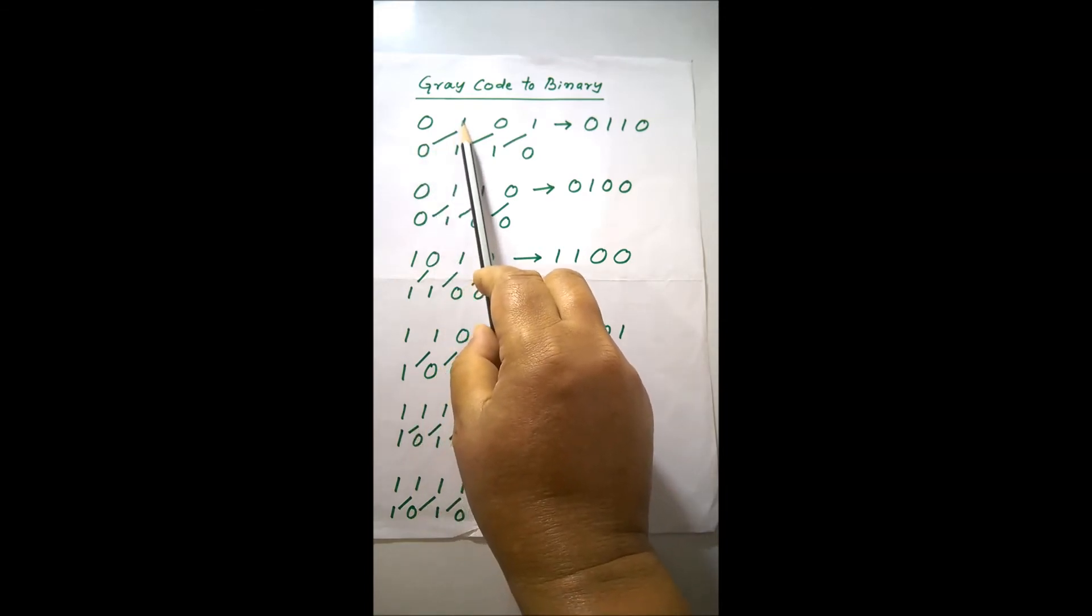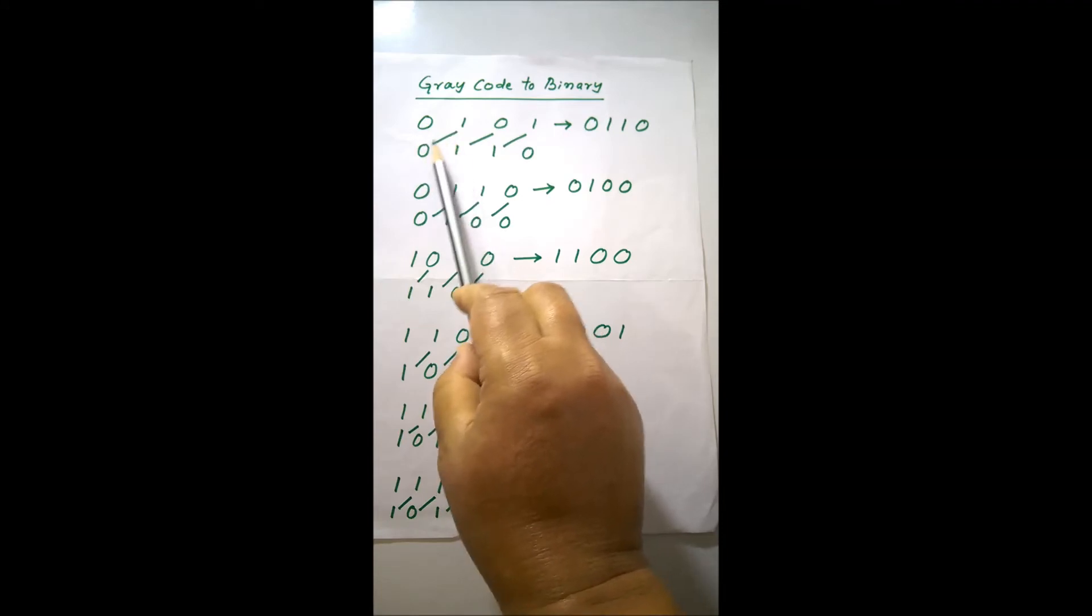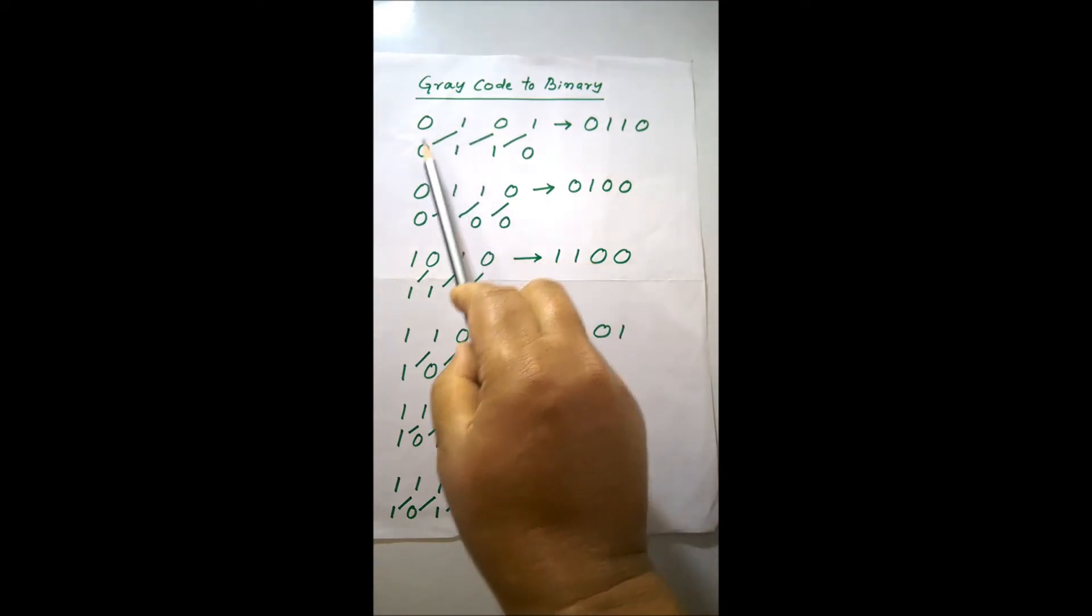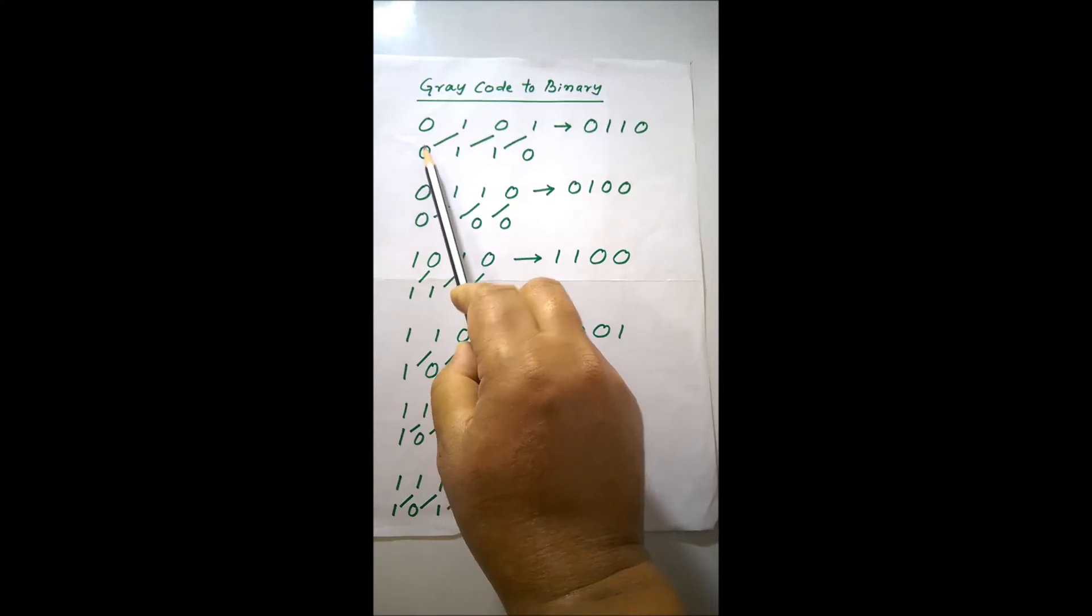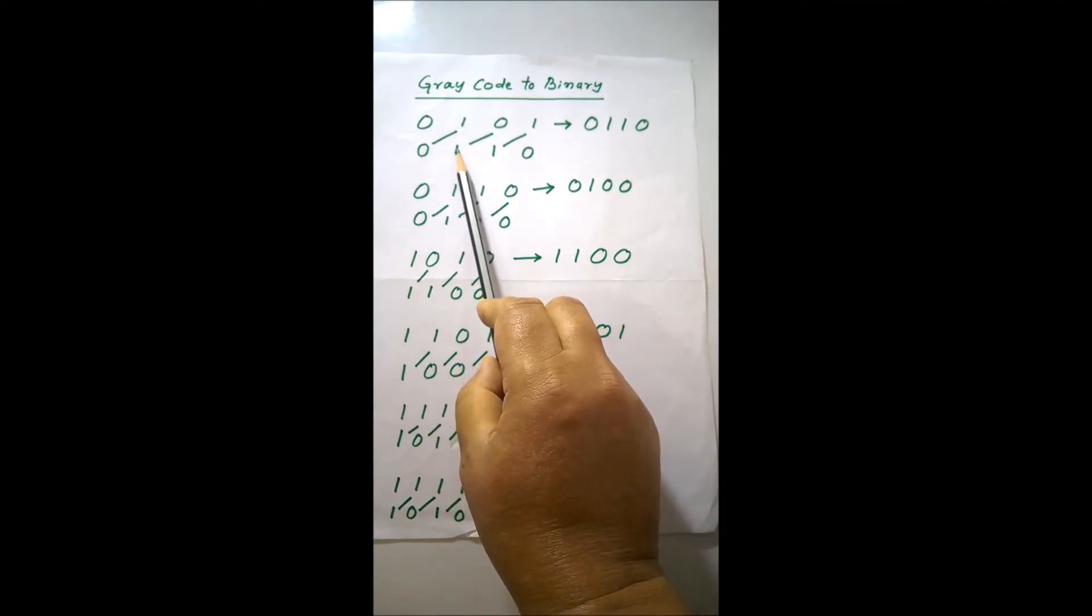Then you XOR it with the second number. This number with a straight line I am showing, the second most significant bit will be XORed with this. After getting, you get 1, that is the second number.